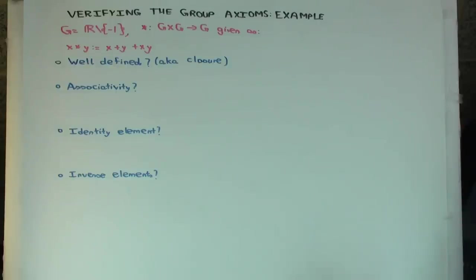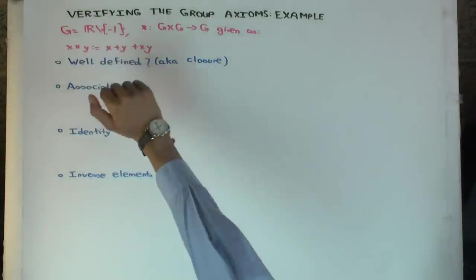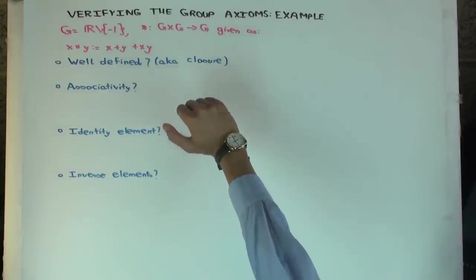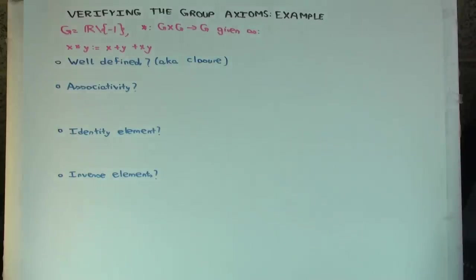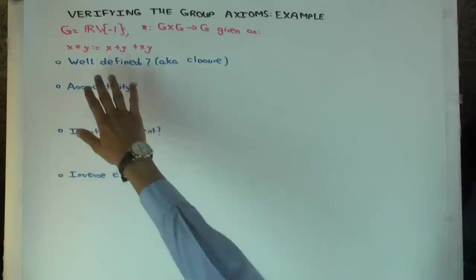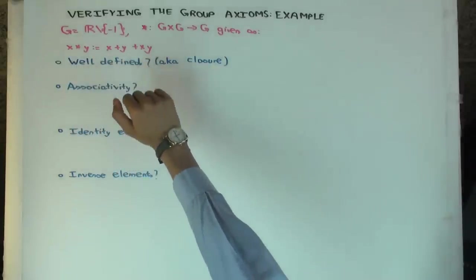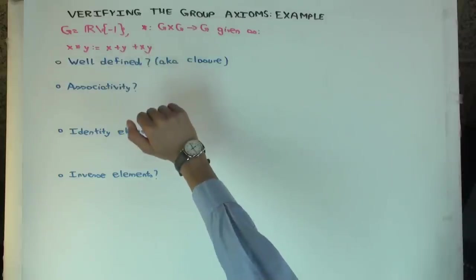So what do you need to check for that? Well, it's obvious if you put in real numbers, you'll get a real number out. So what do we really need to check? Are you sure it's closed? What could be the problem? Can be negative 1.